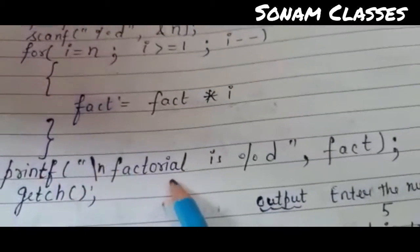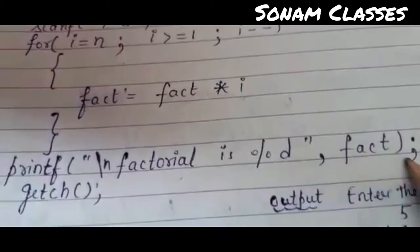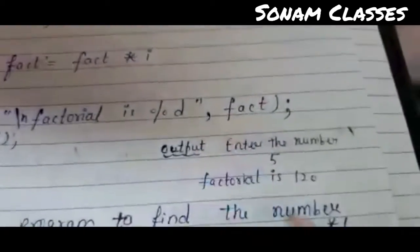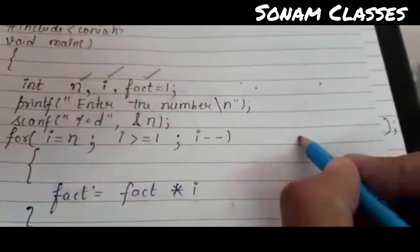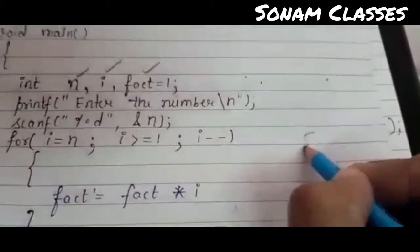Factorial value is cut, factorial is %d, fact, getch. Enter the number 5. Now we have 5 entered. According to this, first i was 5, 5 went back, yes.